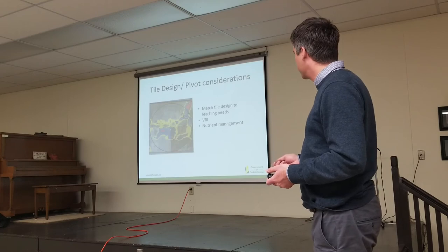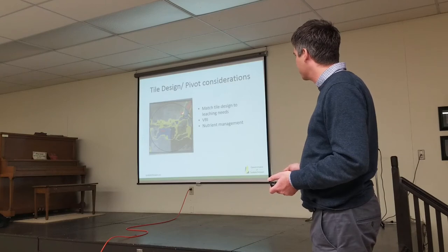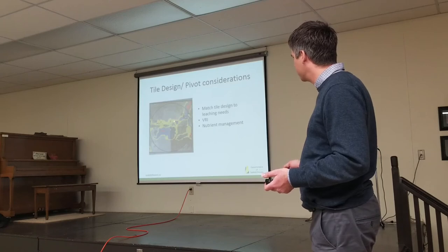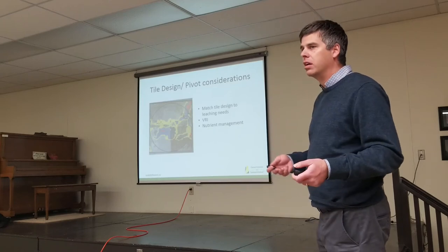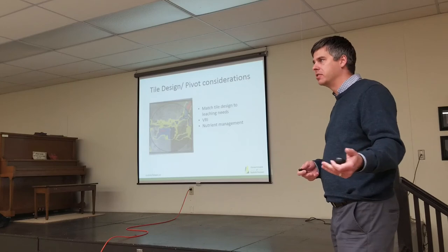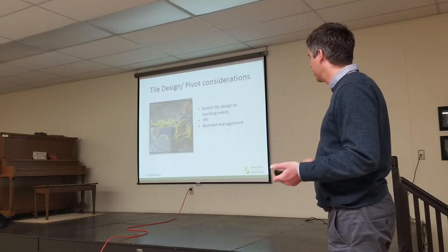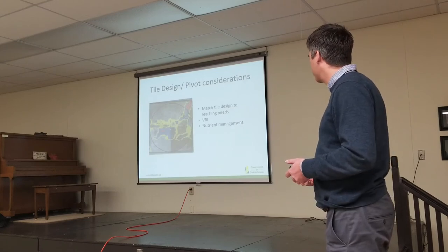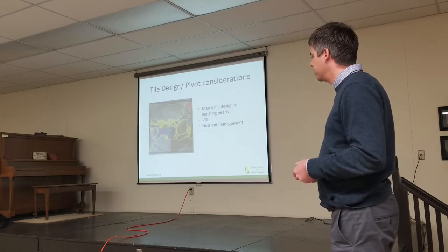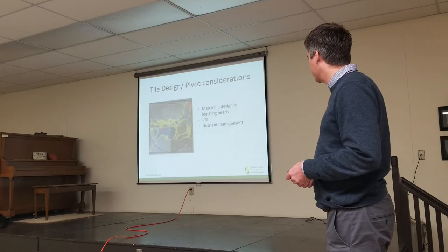Other considerations: if you're installing tile in saline areas, chances are you're not going to put tile underneath the whole pivot — you'll focus on specific areas. Unless you have variable rate irrigation to specifically apply water to those areas, it might cause logistical challenges. If you over-irrigate areas in the fall that don't have tile and water sits there, that's potentially problematic in the spring. From a nutrient management standpoint, anytime you're leaching non-saline areas, you're leaching nitrogen down and losing valuable fertility.